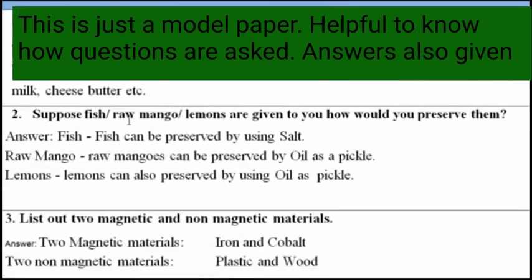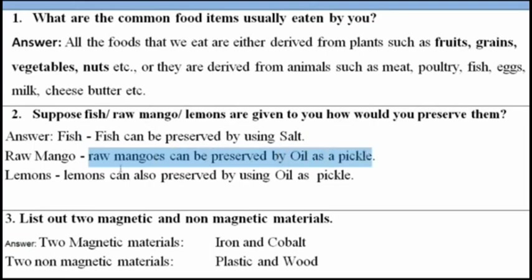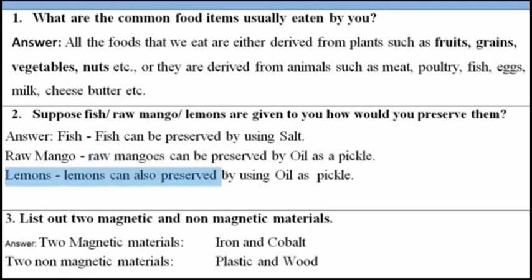Second question: suppose fish, raw mango, and lemons are given to you — how would you preserve them? To preserve fish, we use the preservative salt. For raw mangoes, they can be preserved by oil as pickle. Lemons can also be preserved using oil as pickle.